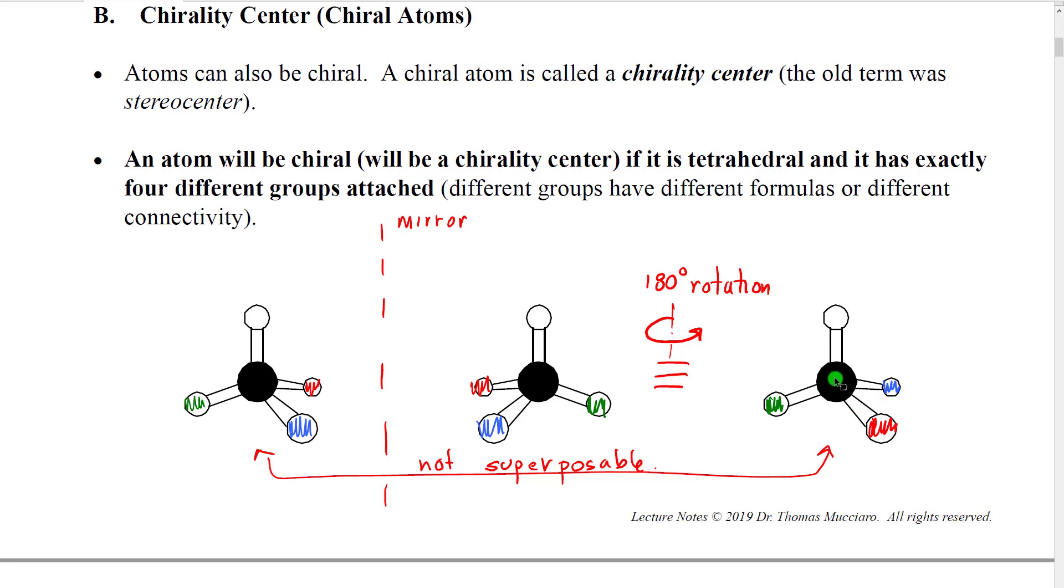If we then take this and slide it on top of the original molecule you can see that we can align the green, the black, and the white atoms but the blue atom here would align with a red atom there and the red atom here would align with a blue atom. Therefore these two mirror images are not superposable. Therefore this is a chiral atom.